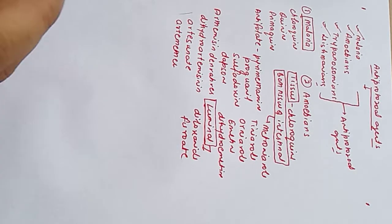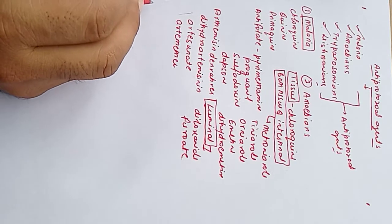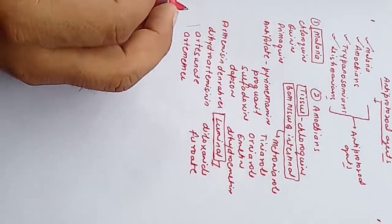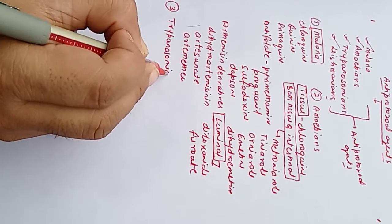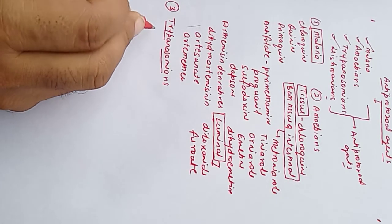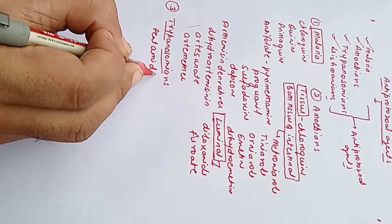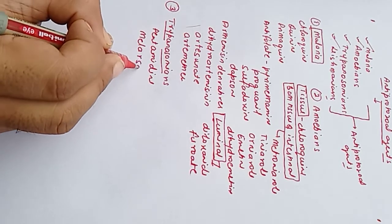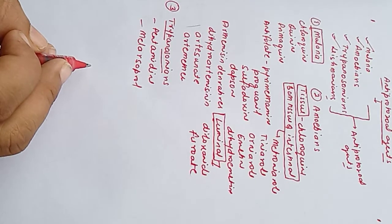The drugs used in the treatment of the third type of protozoan infection, trypanosomiasis, are pentamidine and melarsoprol. These are the two drugs used for trypanosomiasis.